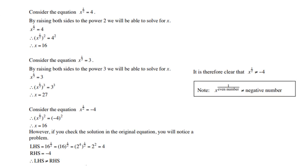Let's consider the equation x to the power of a half equals four. By raising both sides to the power of two, we'll be able to solve for x. So, if you multiply the half on the left-hand side by two, then you must do the same on the right-hand side to balance the equation. Therefore, a half times two gives x to the power of one, and four squared is sixteen. Consider the next one: x to the power of one-third equals three. The same here — multiply both sides by the exponent three, and then three to the third gives you x to the power of one. And three to the power of three is twenty-seven.